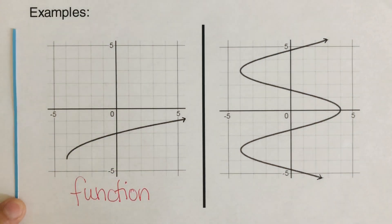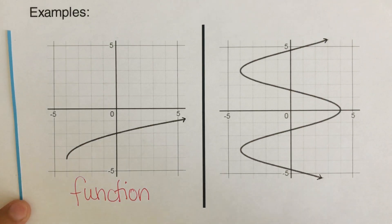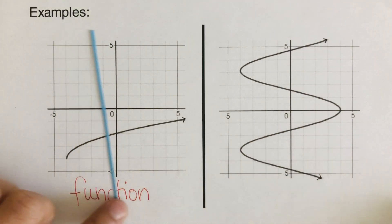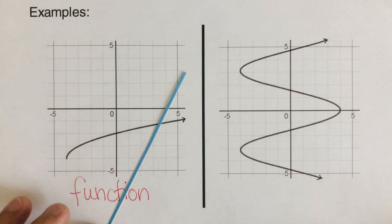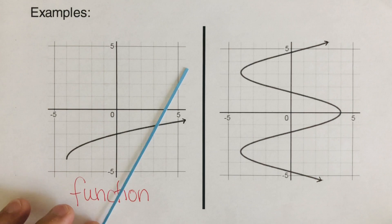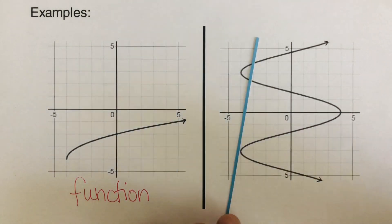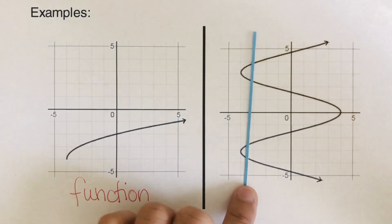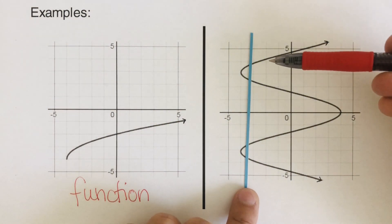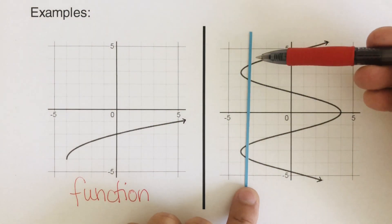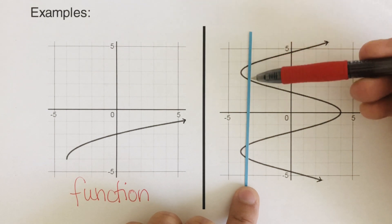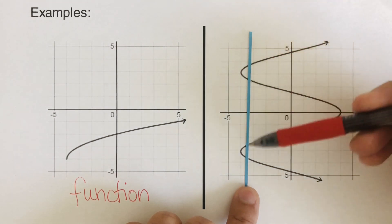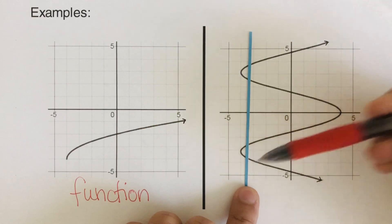Now let's take the second graph. We pass this vertical line through this graph. And at this time, as you can see, if I put this vertical line here, it's touching at four points — one, two, three, four.